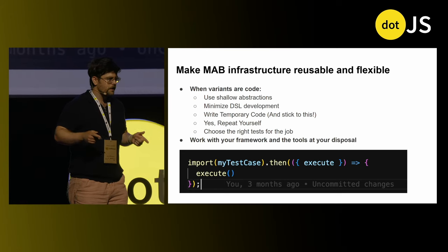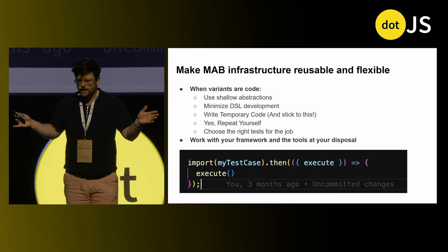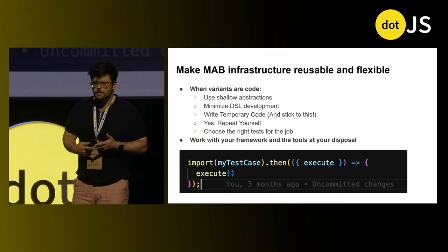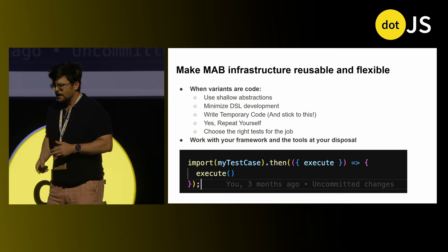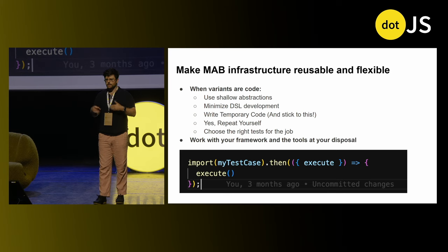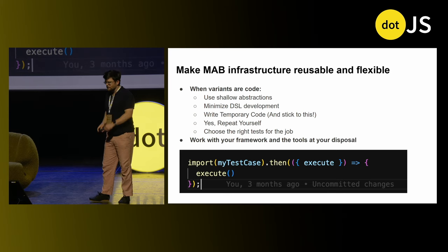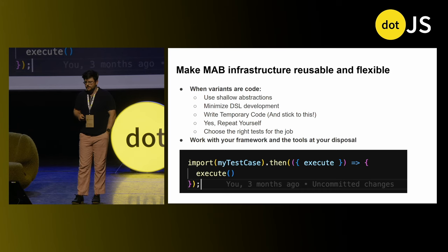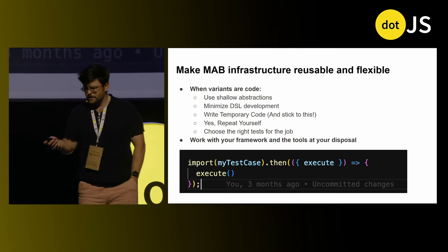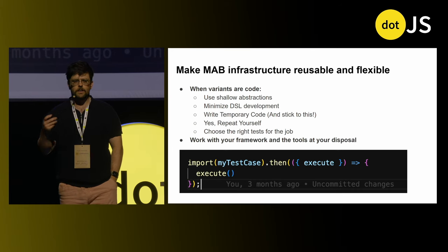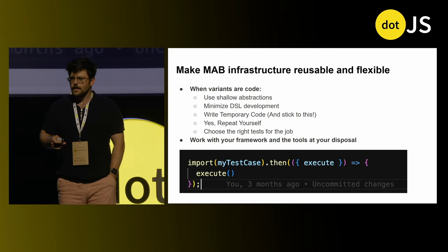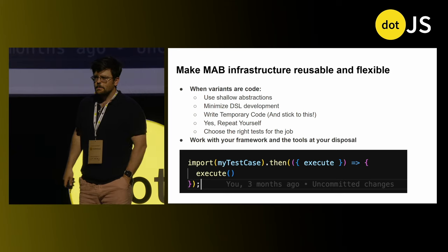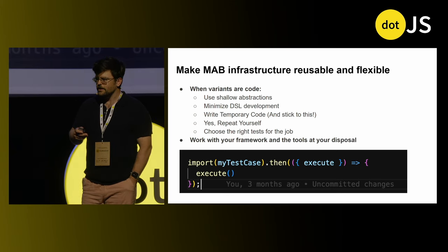When using the multi-armed bandit to pick software, I like to think about a few things: shallow abstractions, more copying and pasting versus deep reuse, more temporary code but with checks and balances so we can remove it when we're done with the process. Do repeat yourself, and allow yourself to choose the right test for the job. I think we want to use tools such as dynamic import — whatever our environment or tooling framework gives us — to ultimately make use of this algorithm. The algorithm is not a set of tools; it's an idea we can use whatever our patterns are to achieve.